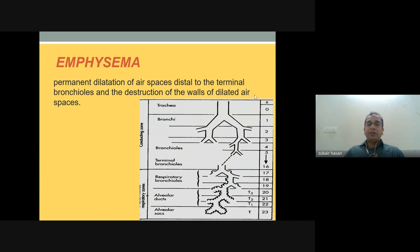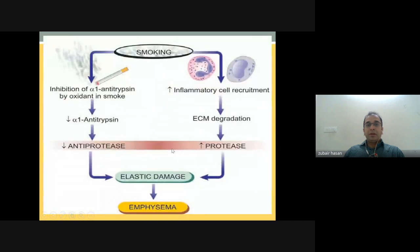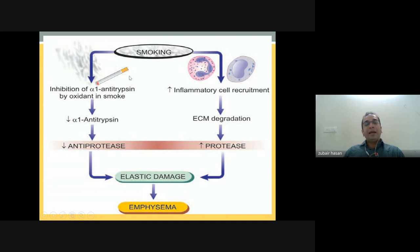Next is emphysema — permanent dilatation of the air spaces distal to the terminal bronchiole with destruction of the walls of the dilated air spaces. Patients of chronic bronchitis progress to emphysema. Emphysema is again linked to smoking: smoking causes inhibition of alpha-1 antitrypsin, which inhibits anti-protease activity and leads to elastic tissue damage.